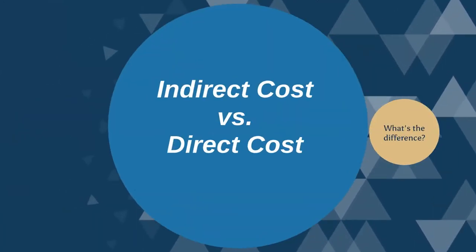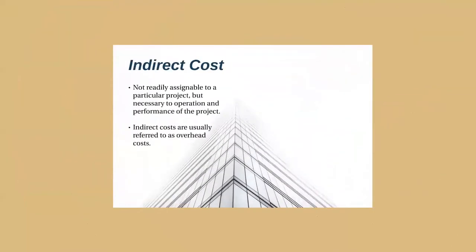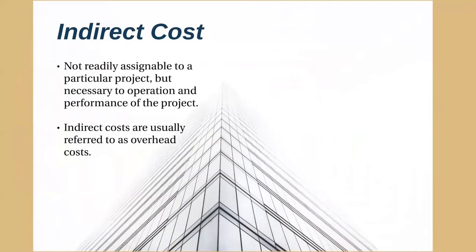What is an indirect cost and how is it different than a direct cost? Indirect costs are costs of an organization that are not readily assignable to a particular project, but are necessary to the operation of the organization and the performance of the project. Indirect costs are usually referred to as overhead costs.